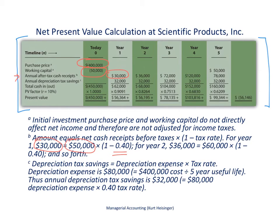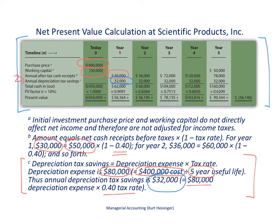The next item is annual depreciation tax savings. Footnote C explains: we are buying production equipment for $400,000 with a useful life of five years and no salvage value, so using straight-line depreciation, depreciation expense is $80,000 per year. We convert that to actual tax savings by multiplying $80,000 by the 40% tax rate, giving us annual tax savings of $32,000. This $32,000 appears each year for all five years.